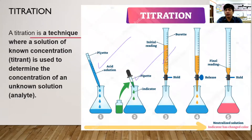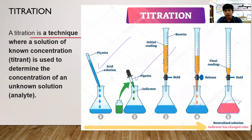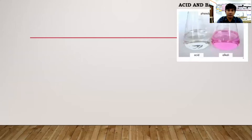The burette contains one molar sodium hydroxide. Add the sodium hydroxide to the acid until it changes color to a pale pink or light pink. That is the titration process.